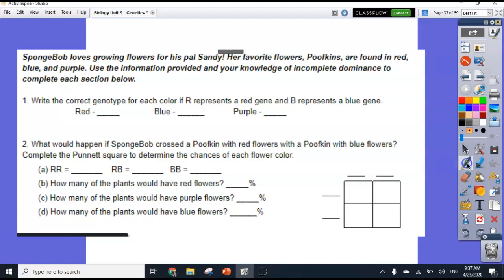So number one here, it says write the correct genotype. Remember, genotype means the letters. For each color, if R represents a red gene and B represents a blue gene. So in order to have a red flower, what letters am I going to have if R is red and B is blue? I'm going to have two R's. What letters am I going to have if B represents a blue gene? I would need two B's to get blue. And what letters would I need to have to get purple? I'd need one red and one blue. Now it doesn't matter if you write R, B, or if you write B, R, they're the same thing.